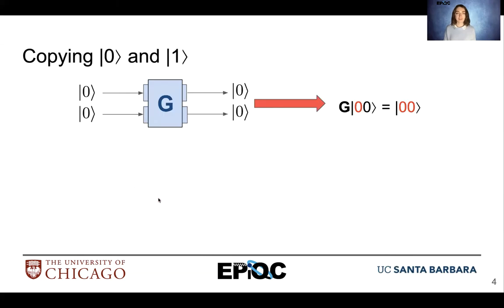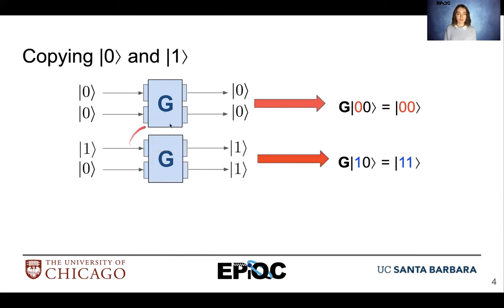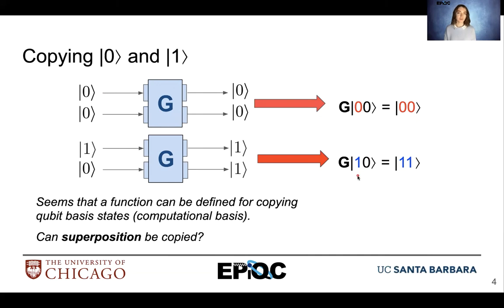Let's think about copying basis states. If we have the computational basis, ket 0 and ket 1, and we attempt to copy it, we take the first qubit — the qubit on the top — and copy it on both output terminals. So ket 0 becomes 00, and ket 1 becomes 11. We're essentially using that ancilla and placing the value of this first qubit onto the ancilla qubit. It seems that when working in basis states, we're able to do some sort of copying mechanism — but can superposition be copied?